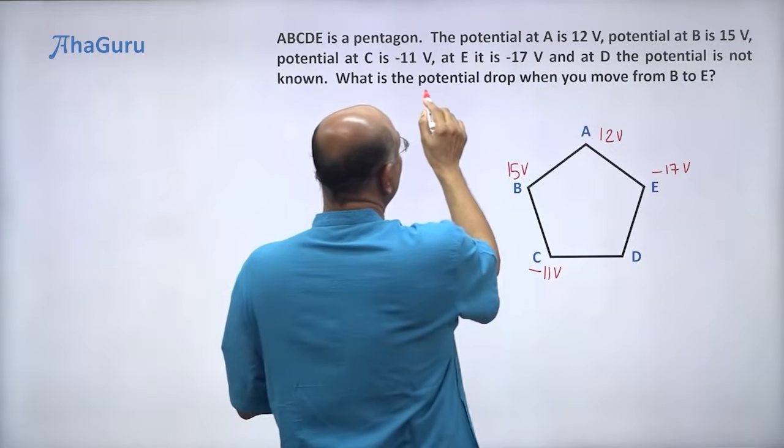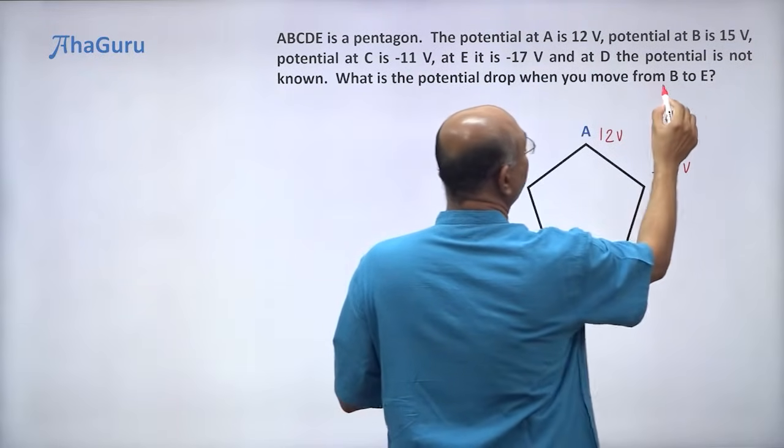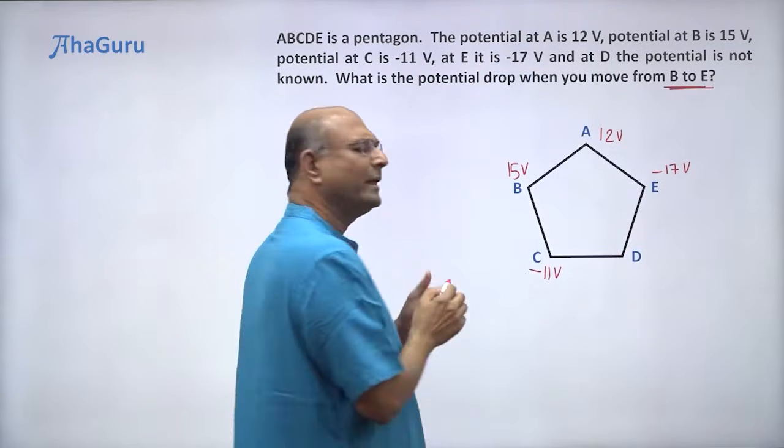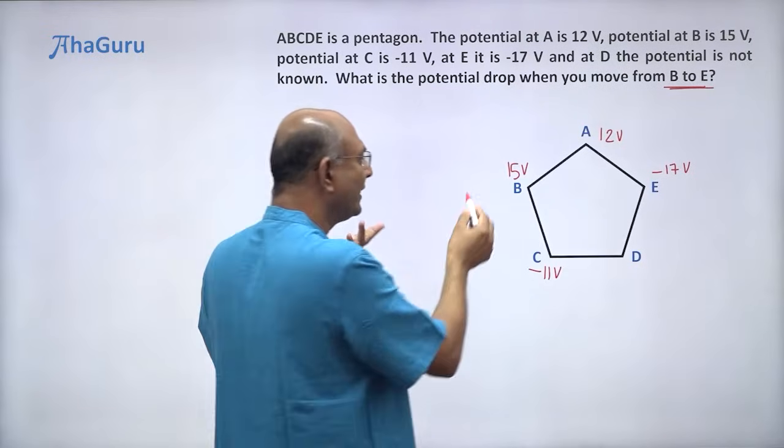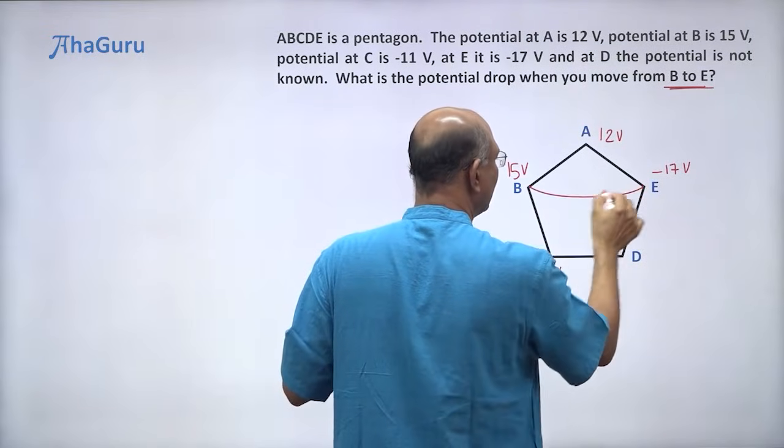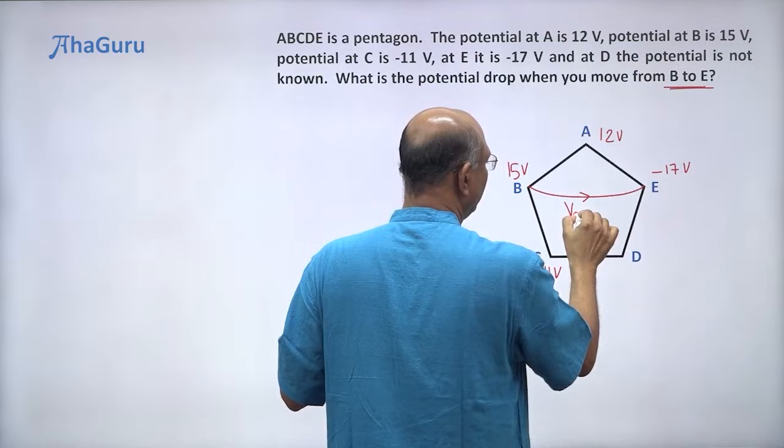What is the potential drop when you move from B to E? How should I move from B to E? Well, I can move any way I want. I can move like this. So this is VBE.